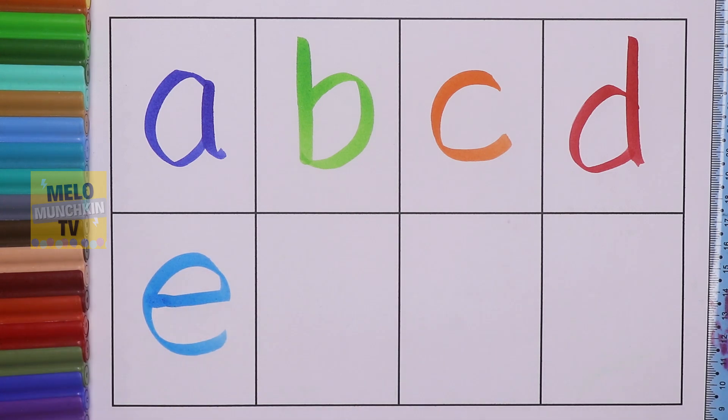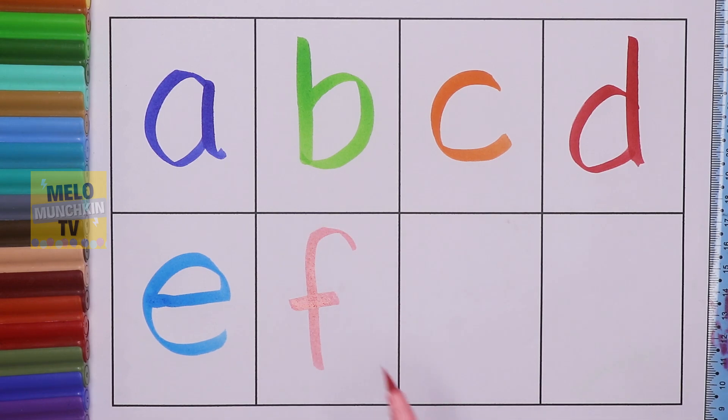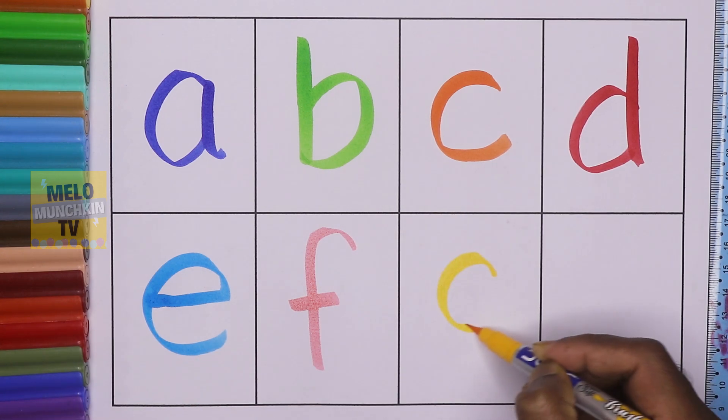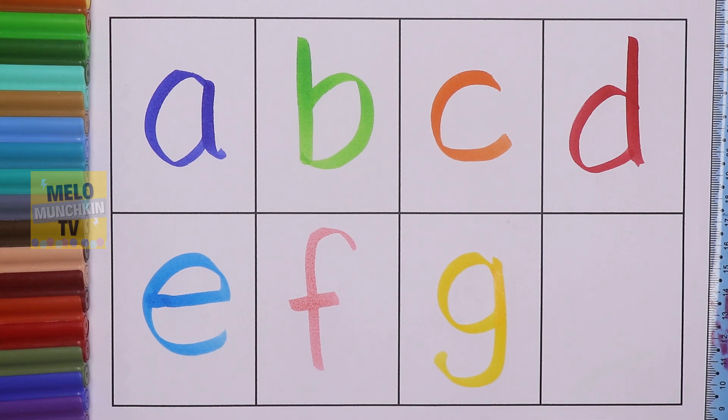Light pink color. Small f. F for flower. Yellow color. This is G. G for girl.